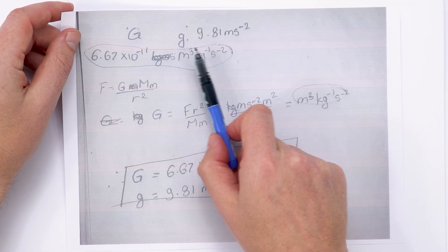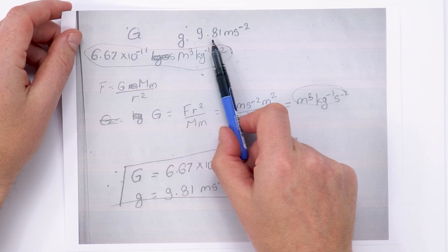Okay so I've gone into a bit of detail there. Let me just show you what some of the students have put. So this student here they've got a value for little g as 9.81.